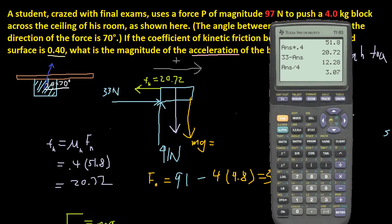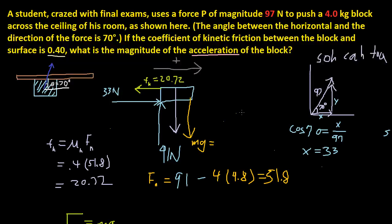Let's type that in to the website and see if it's right — and it is correct! So the answer is 3.07 for me, but you might get a different answer. The method is the same. Remember, if the block is on the ceiling, remember to account for gravity — unless there's no gravity, like in space where you're in free fall and can't feel its effects.